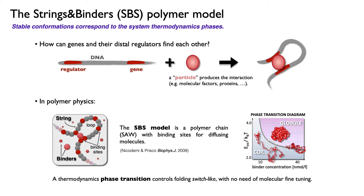Maybe we can start with the problem in its simplest form: how can two distal sites on a chromosome filament — for instance a regulator and its gene — interact with each other? The basic scenario we proposed some years ago is the typical approach of a physicist: if two distal objects interact, then there must be a field of particles mediating the interaction. Of course this is not a fundamental particle, but a molecular factor or a protein that can bridge sites along the chromosome.